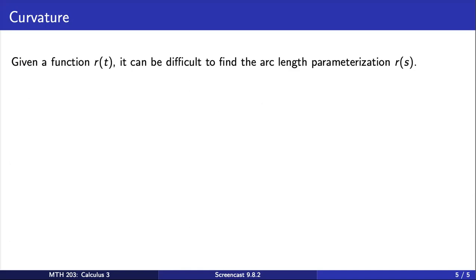Given a function in terms of an arbitrary parameter T, it can sometimes be difficult to find the arc length parameterization, as we used on the previous slide in the definition. Thus, it is helpful to have alternative formulas for curvature that do not depend on arc length, and we give two such formulas here.